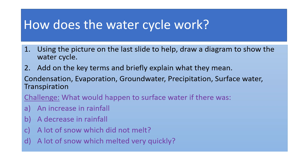This is the first main task of two in this lesson. Using the picture on the last slide, draw a diagram to show the water cycle. Add key terms and briefly explain what they mean. Those terms are: condensation, evaporation, groundwater, precipitation, surface water, and transpiration. There are also challenge questions A to D — think about them. Answers are on the next slide.